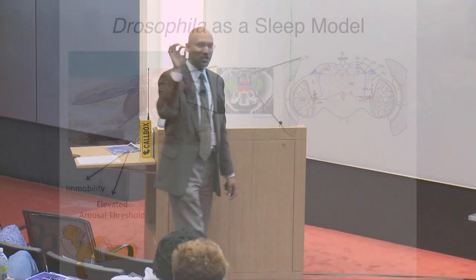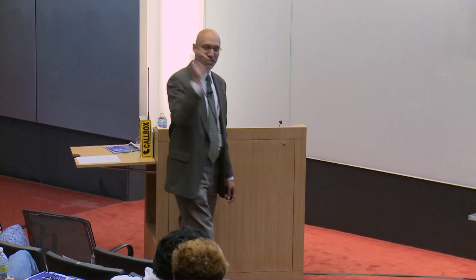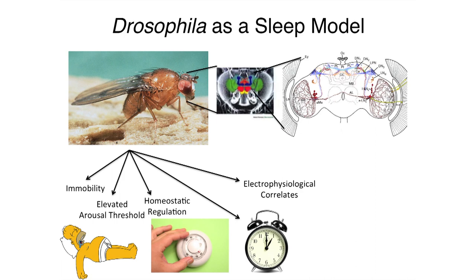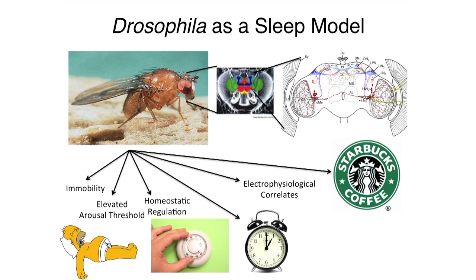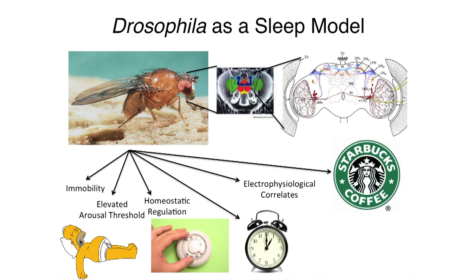The fly is a good model for sleep, and there are several pieces of evidence. There's immobility — the fly stops moving. They have an elevated arousal threshold: to get them to move, you need to stimulate them harder and harder. Homeostatic regulation: if you deprive a fly of a night of sleep, it tries to catch up the next day. It's regulated by a circadian clock. There are electrophysiological correlates — the brain's electrical activity changes when the fly is sleeping. And there's what I call the Starbucks test: if you give the fly caffeine, you can keep it awake. This argues that if a drug specifically affects sleep in the same way in a fly, the underlying chemical mechanisms are similar between the two systems.